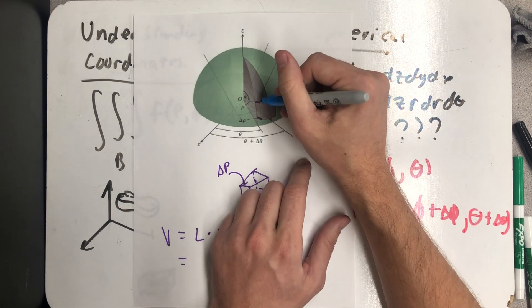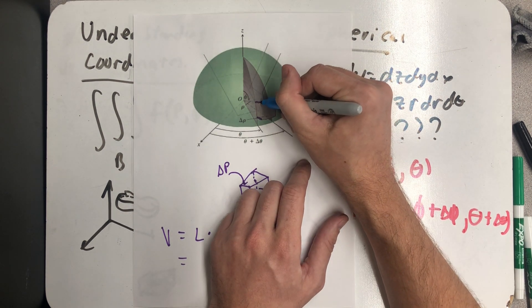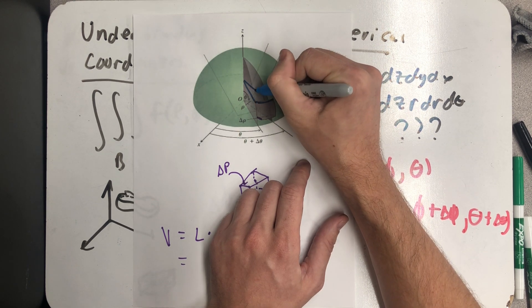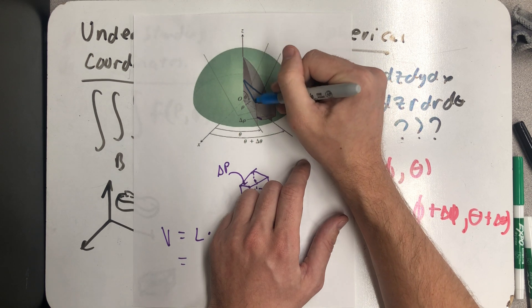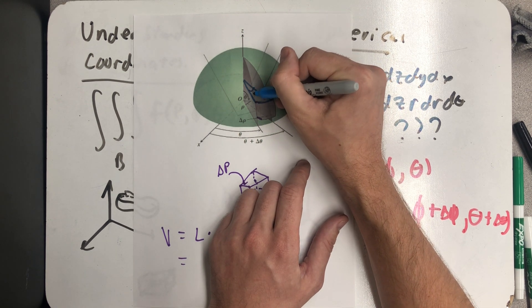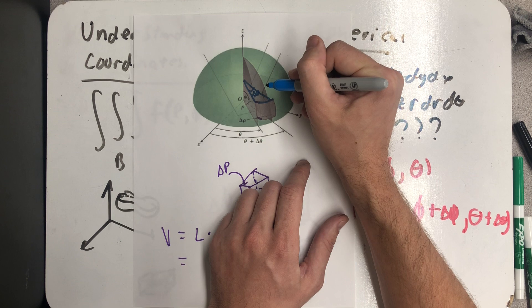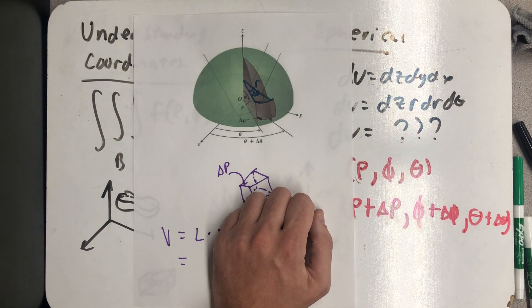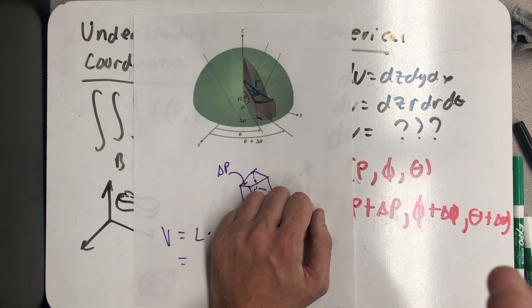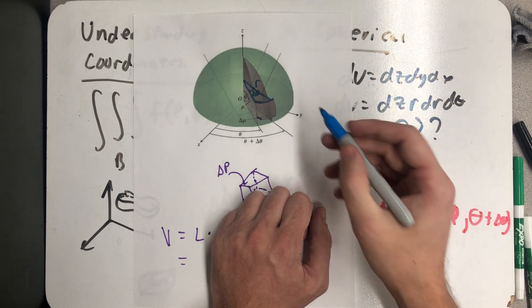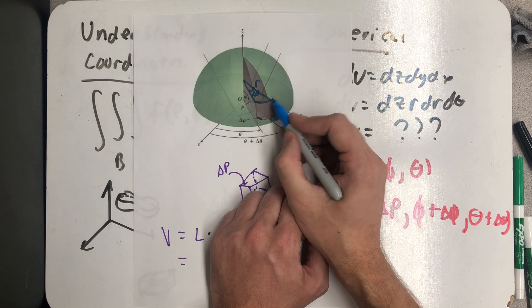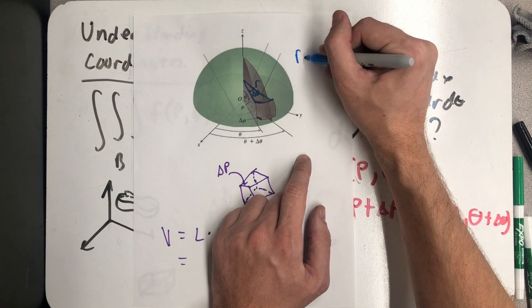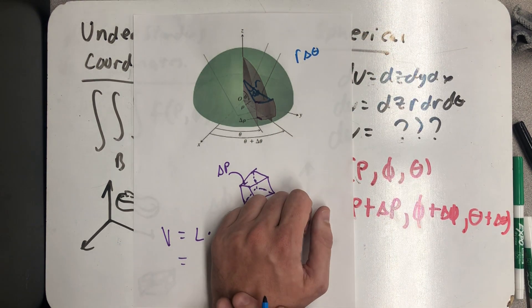And now I need to think about this curvy distance here. And I have some nice happy support lines in there. Well, those are parallel to the xy plane, so this angle in here is Δθ. That's what's going on there. And I recognize that distance. That's the distance r from cylindrical coordinates. And so if I think about that arc length, using the formula for arc length, it would be r times Δθ.